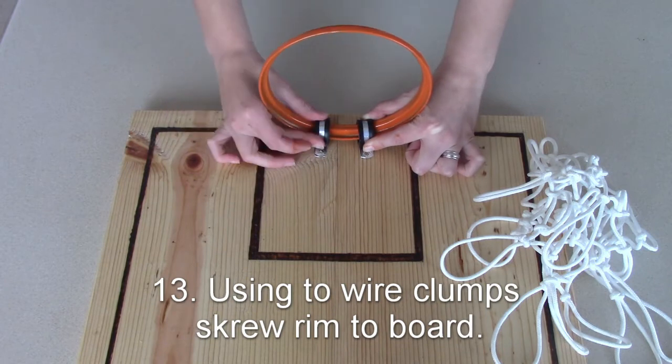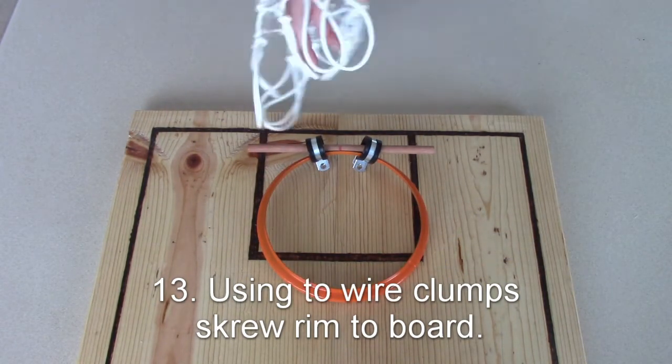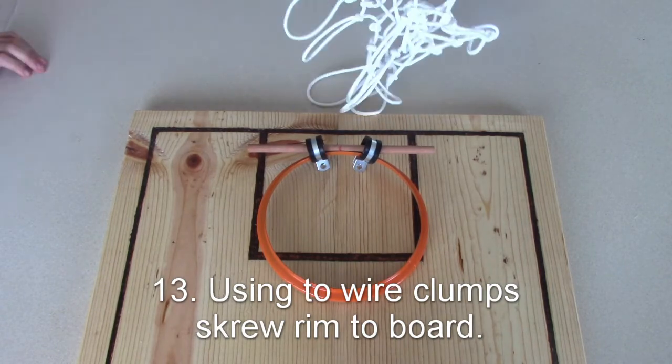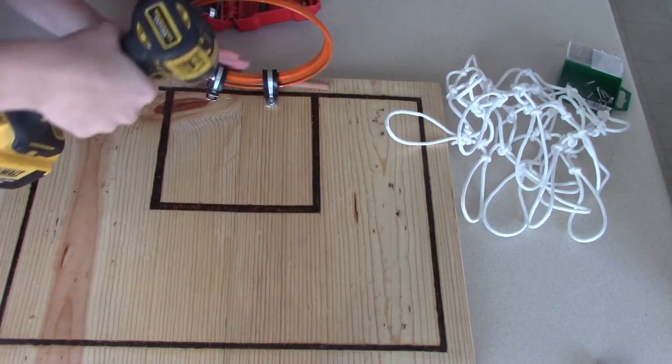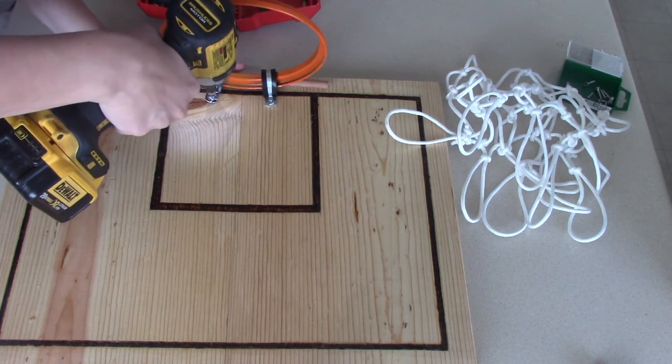The final step is hot gluing the net to the rim and I just made sure that it was evenly spaced, the loops are evenly spaced inside the inner part of the rim. And there you go, that's how I made my basketball hoop board.